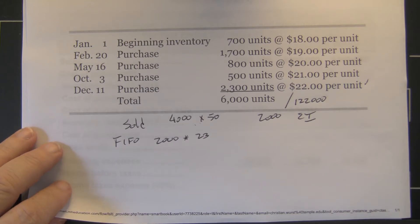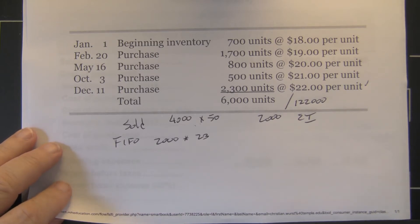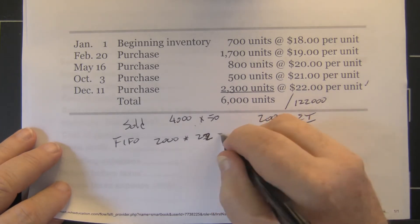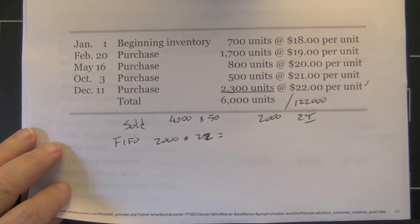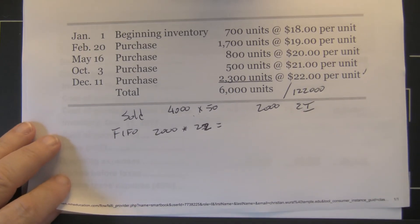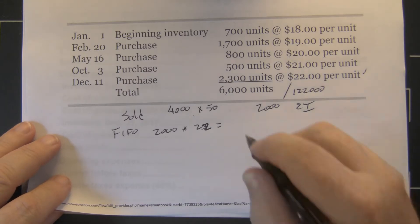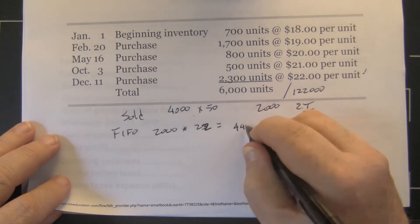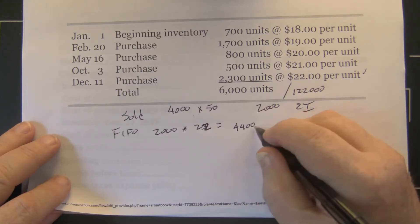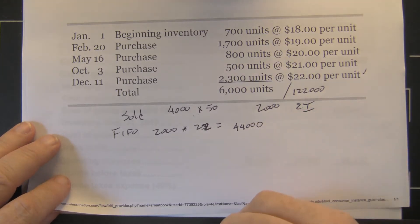Actually, it's 2,000 units at $22 — I wrote $23, my mistake. So when we do that math we come up with $44,000 as the value of the ending inventory under FIFO.